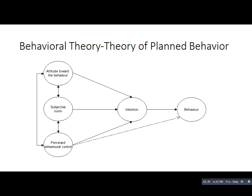Here's an example to illustrate. This is the theory of planned behavior. What it basically says is that if you have a positive attitude towards a behavior such as physical activity, if others encourage you and think it's great to do more physical activity, and if you have great perceived behavior control or self-efficacy, this can impact your intention to be physically active, which can then lead to actual behavior.